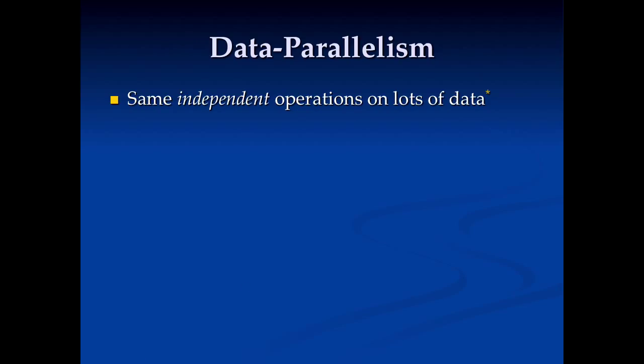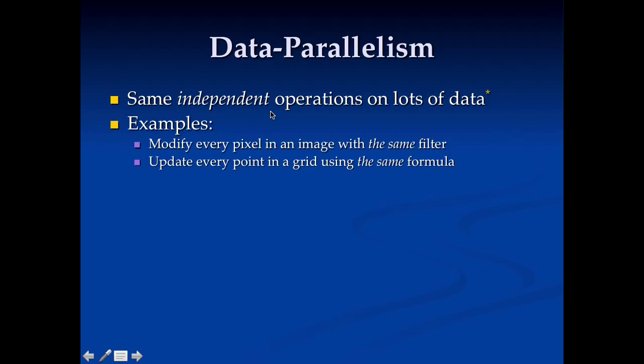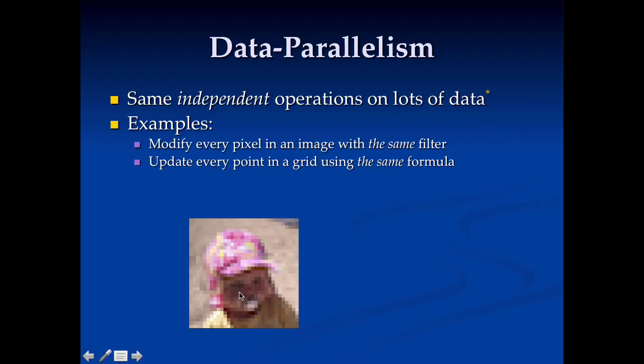So data parallelism was the second thing here. And data parallel execution means I'm doing the same independent operations on lots of data. So let's take a look at that. Examples are modifying pixels in an image or updating points on a grid. Here's an image I'm going to process.